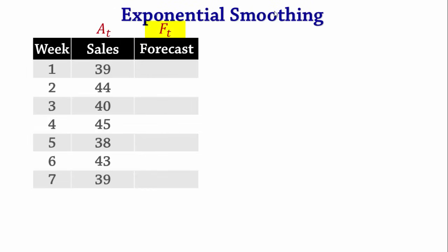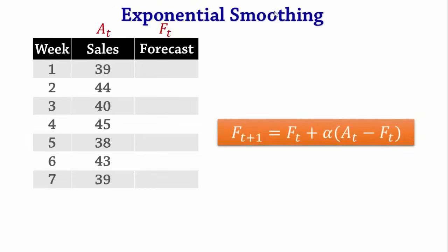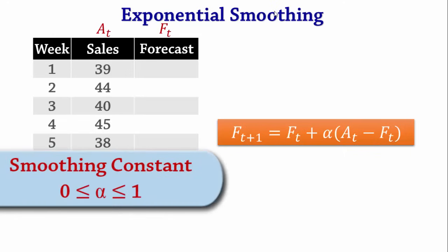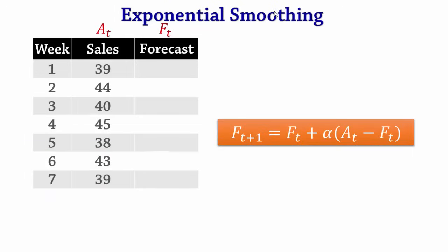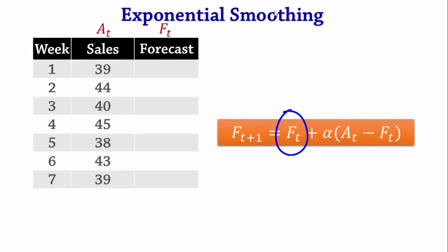The Exponential Smoothing method uses the formula: FT+1 = FT + alpha × (AT − FT), where alpha is a value between 0 and 1 referred to as the smoothing constant. This means that our forecast for the current period is obtained by adding the forecast from the last period to a fraction of the error from the last period.